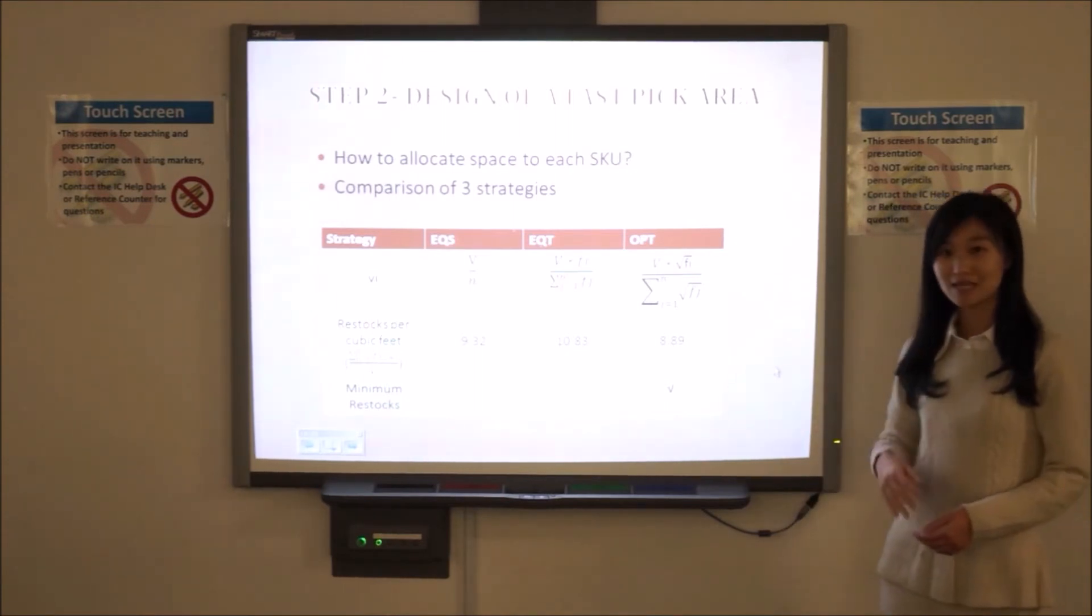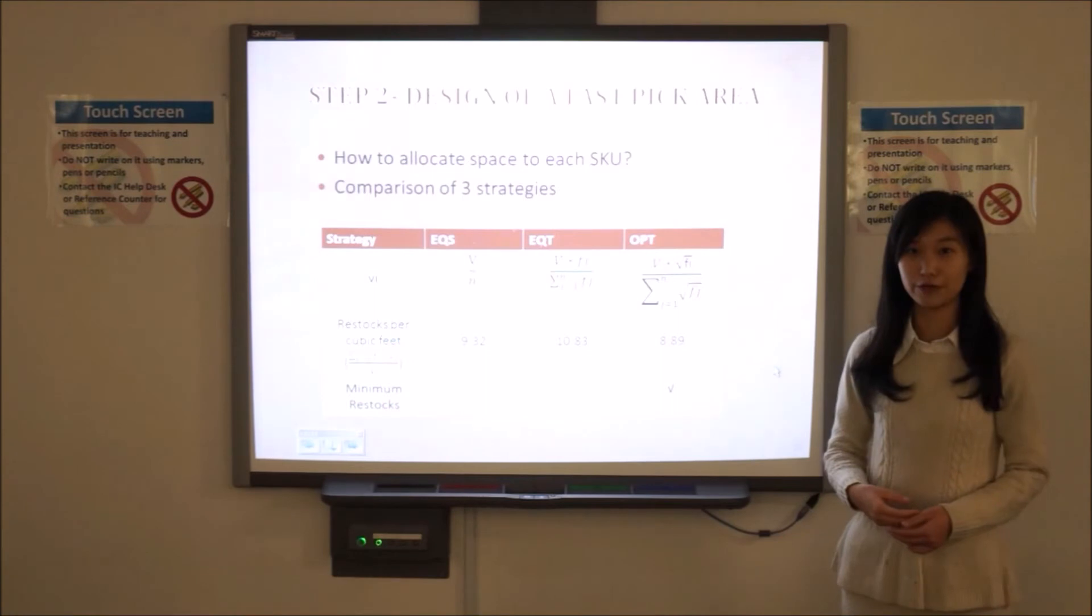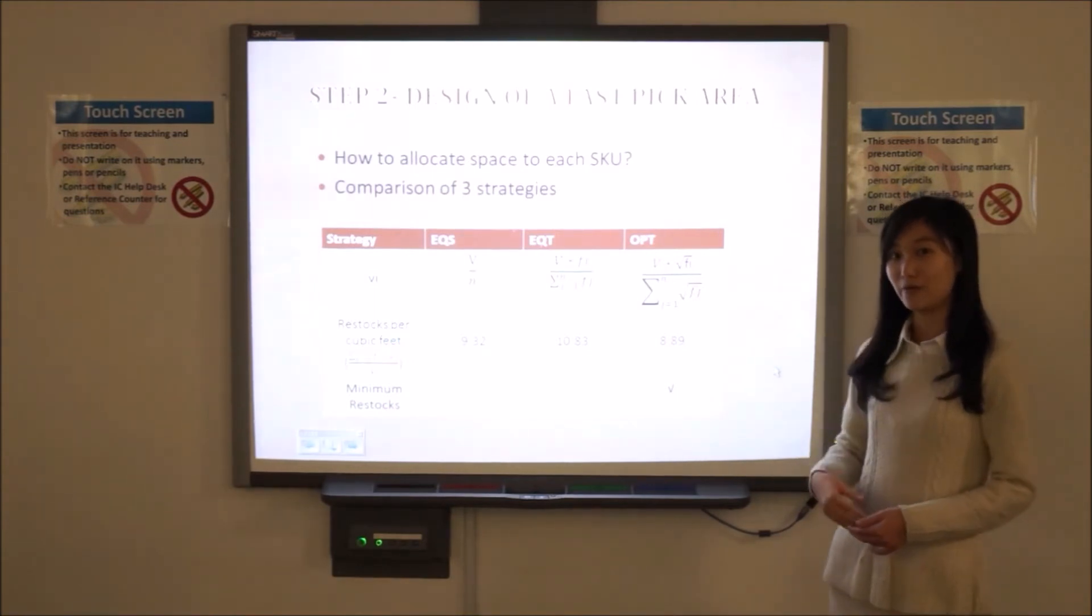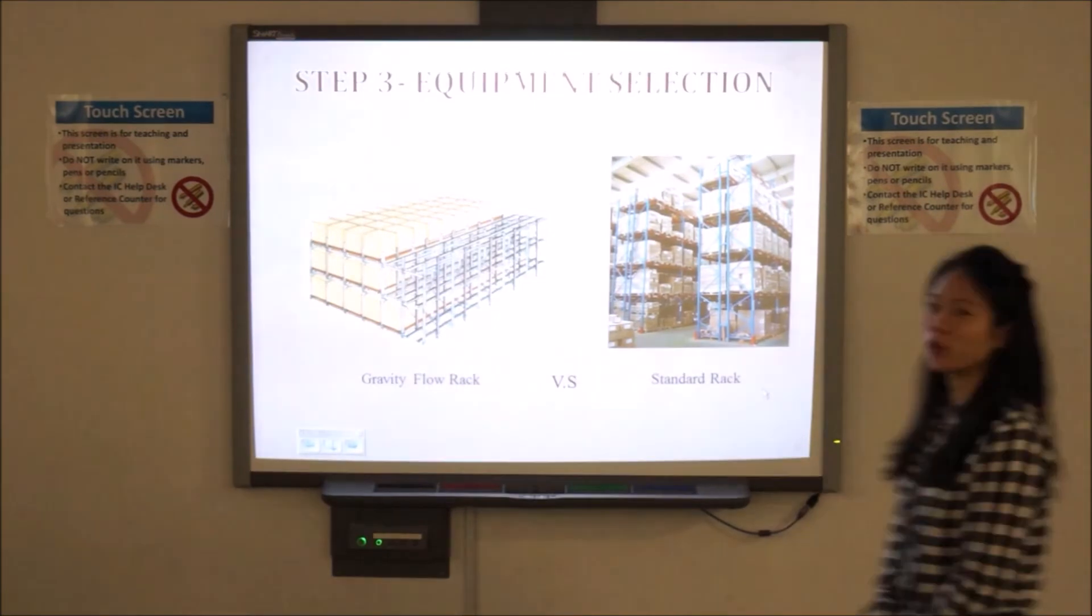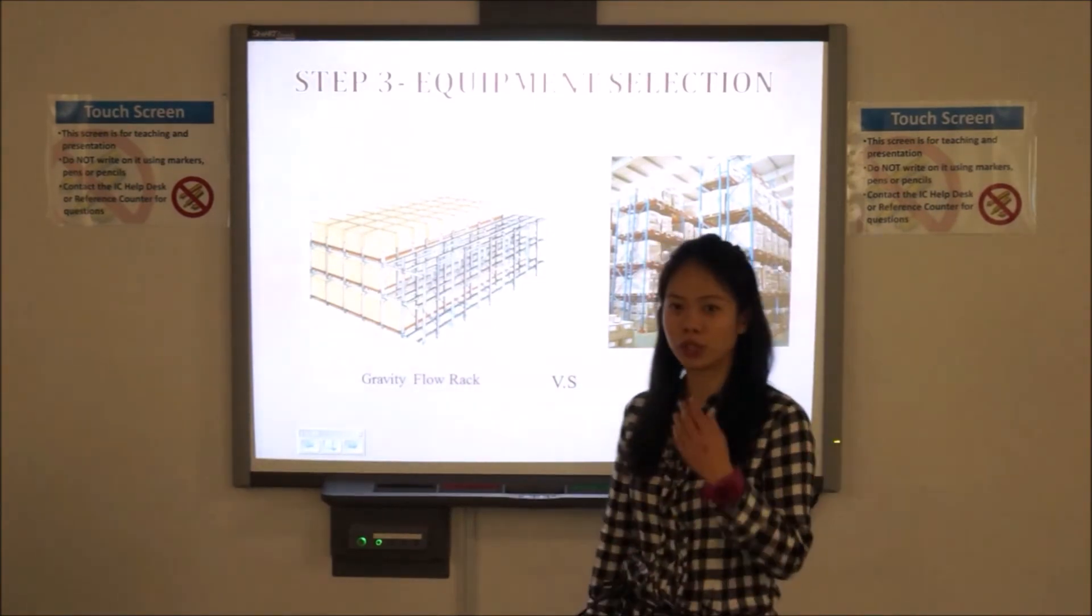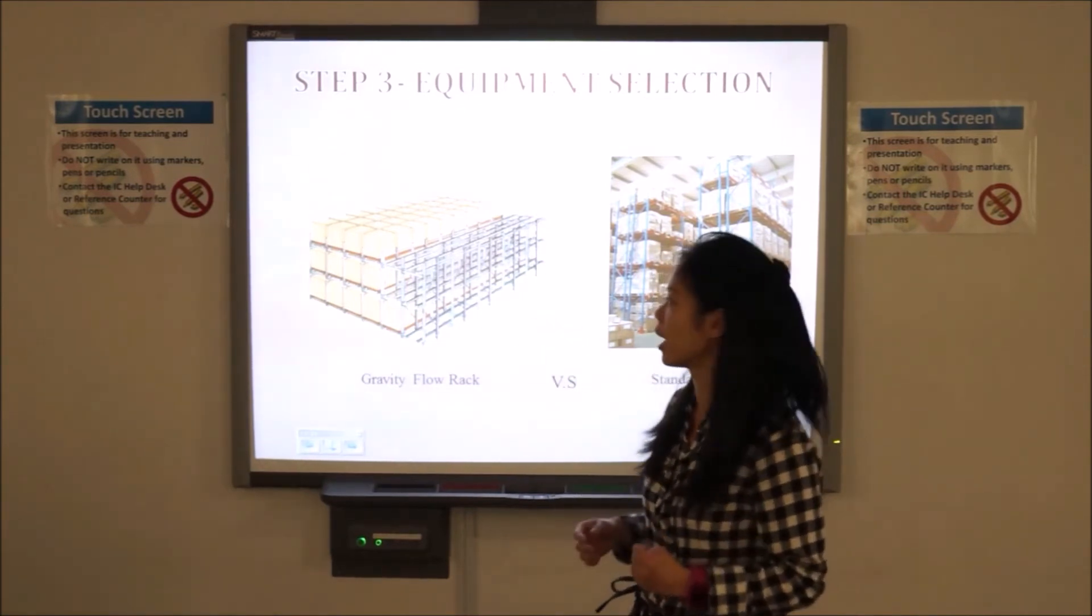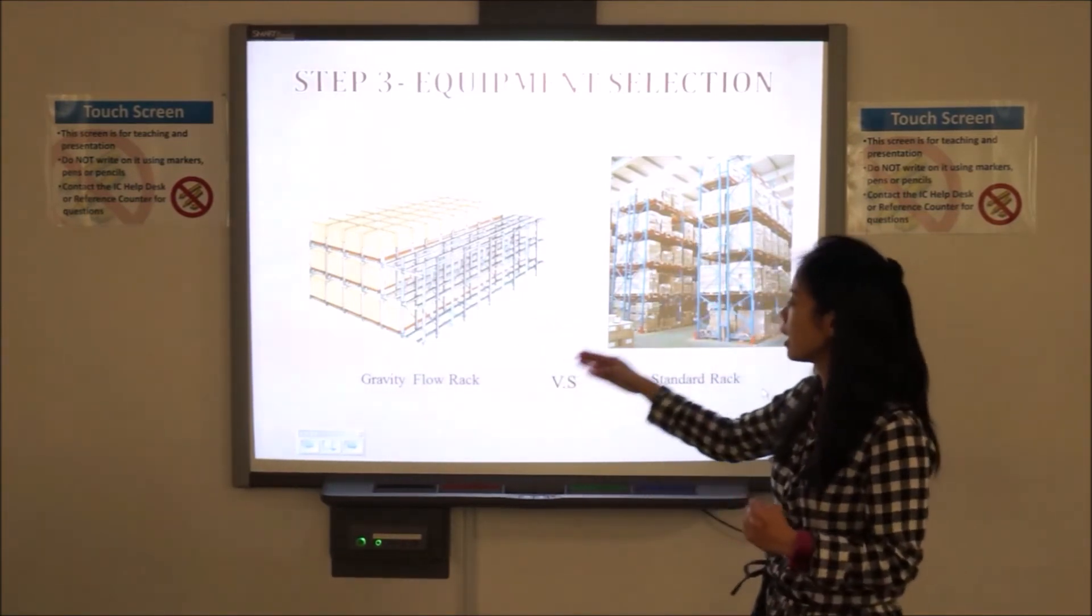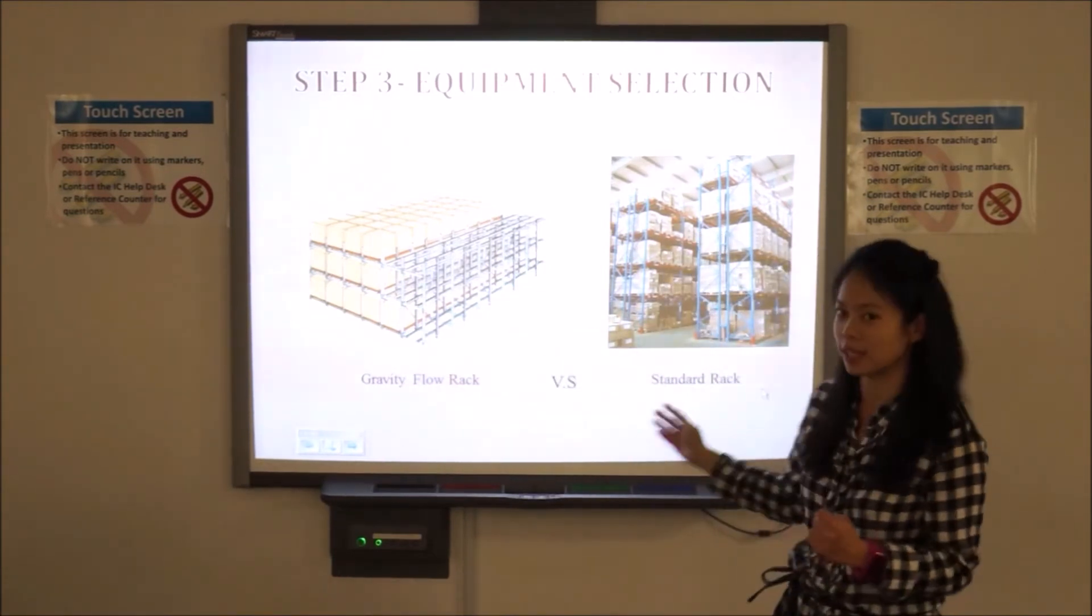And we can see that the OPT strategy which we adopt is with the minimum restock per cubic feet. Next, Yanis and Anne will tell us how the selection of racks would influence our costs. In the following, I'm going to introduce the equipment selection in the fast packing area. In our case, there were two types of rack. The first one is gravity flow rack. The second one is standard rack.